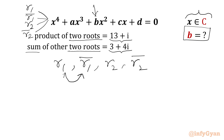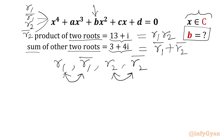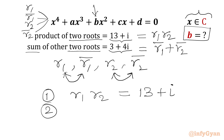The product of two roots equals the complex number 13 + i. If we multiply r1 with r1_bar or r2 with r2_bar we get a real number, so we consider r1·r2 = 13 + i as equation 1. The remaining roots are r1_bar and r2_bar, giving us equation 2: r1_bar + r2_bar = 3 + 4i.